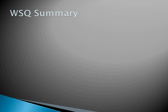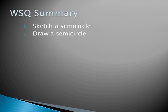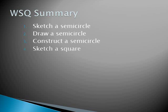So for your WSQ summary, I need you to sketch a semicircle, draw a semicircle, and then construct a semicircle. Then you're going to sketch a square and then draw a square. We will learn how to construct a square later on, further down. I want to say it's like chapter six or seven, quite a ways away. So I will see you in class.